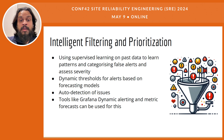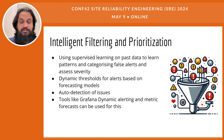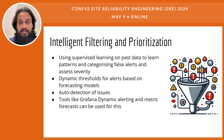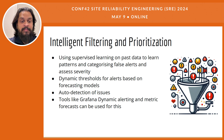By continuously monitoring system metrics and logs, AI algorithms can detect anomalies that may indicate emerging issues, often before they are apparent to human observers. This capability enables SREs to quickly identify and mitigate problems, often automating the response to standard issues without human intervention. For instance, an AI system can detect an unusual increase in response time for a service and trigger an auto-scaling action or restart the service without needing direct human oversight. This not only speeds up the resolution process but also helps in maintaining high availability and performance consistency across services.